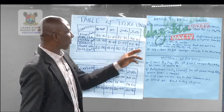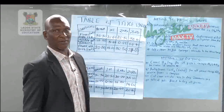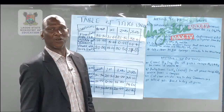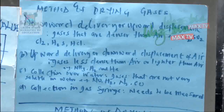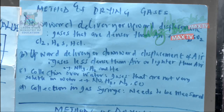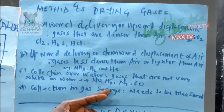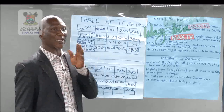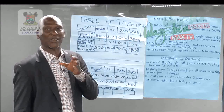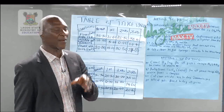We also have collection over water. We can collect some gases over water when preparing in the laboratory. Those are the gases that are not very soluble in water — for example, nitrogen dioxide, hydrogen gas, nitrogen gas, and carbon monoxide. You can collect those ones over water because all gases cannot be collected using the same method.